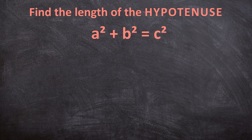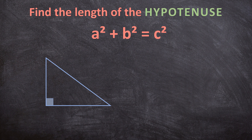First let's draw a right triangle. We know it is a right triangle because of the small square in one of the corners, which indicates a 90-degree angle. The hypotenuse is always the side opposite the 90-degree angle, and that is what we want to calculate.